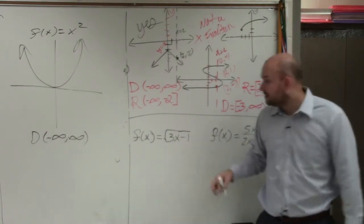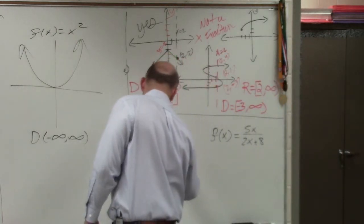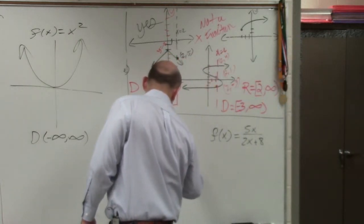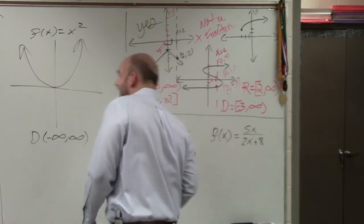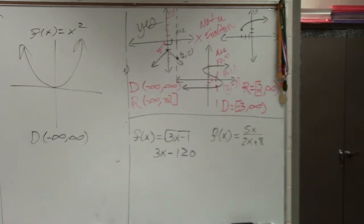Would you guys agree with that? So what I'm going to write is an inequality that 3x minus 1 has to be greater than or equal to zero.